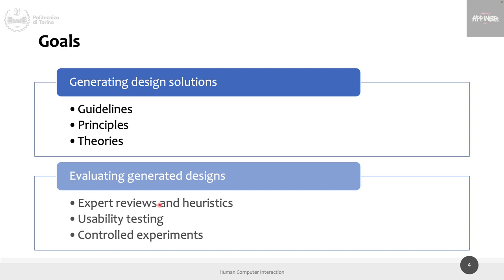Before moving to the next slide — what are the differences between theories, principles, and guidelines? What is a theory? A theory can be proved; a guideline is just advice. But that describes what we can do with a theory, not what a theory is. Have we already seen some theories in this course?